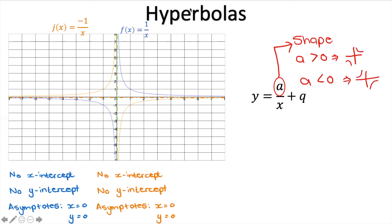How do you remember this? In the first quadrant, y values are positive and x values are positive — a positive times a positive gives a positive. In the third quadrant, x and y are both negative — a negative times a negative gives a positive. So when a is positive, it'll be in those quadrants. In the second quadrant, y is positive but x is negative — positive times negative is negative — and similarly in the fourth quadrant. So when a is negative, the graph falls in quadrants 2 and 4.